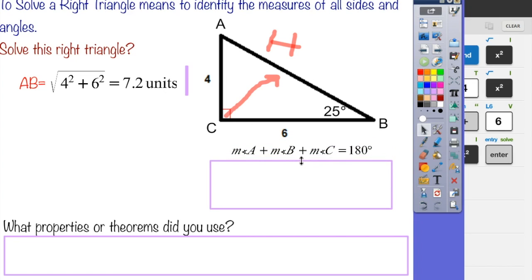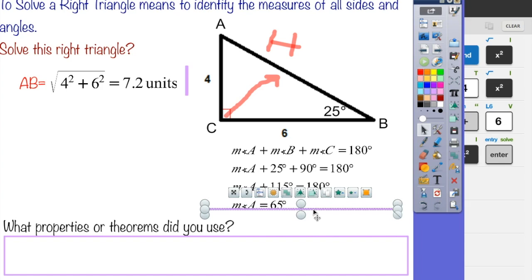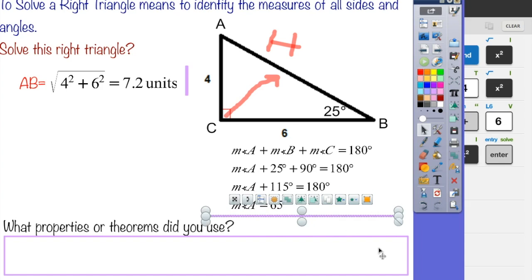Okay, now how are we going to find the measurement of angle A? Well, we know from the triangle sum theorem that the measure of the interior angles of the triangle is 180 degrees. So I'm going to set up my equation and then I'm going to substitute what I know. And when I add 25 plus 90, I get 115, then you subtract 115 from both sides, leaving you with 65 degrees.